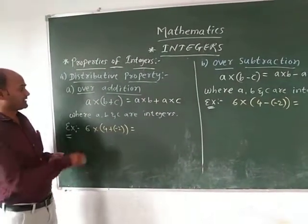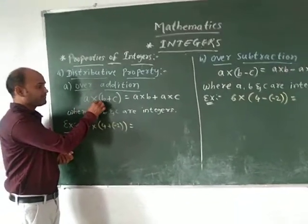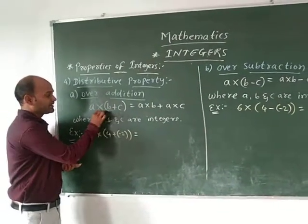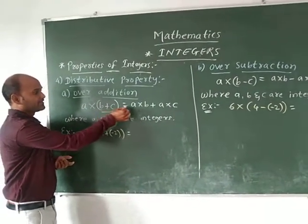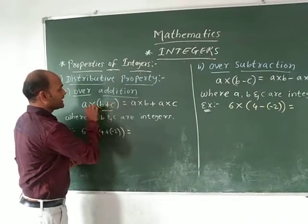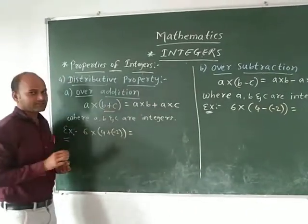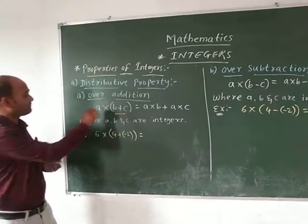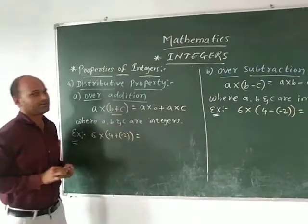It says that in general form we can say A is multiplied by B plus C. Then A is multiplied by B plus A is multiplied by C is the answer. So here A, B and C are the three integers.